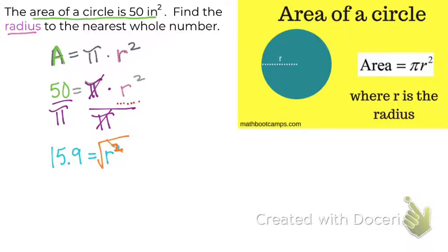What we do on the right side, we have to do on the left side as well. So what is the square root of 15.9? It's about 3.98.